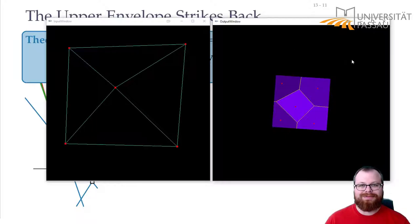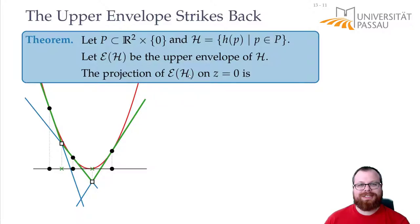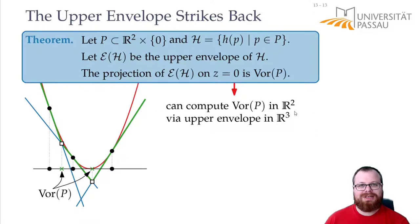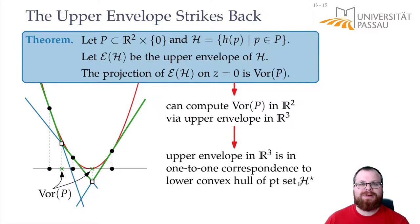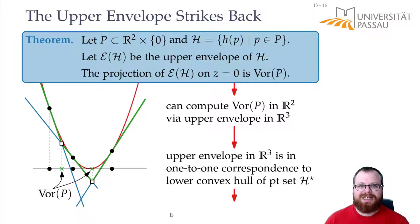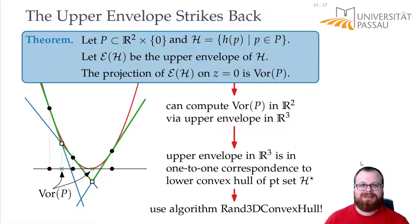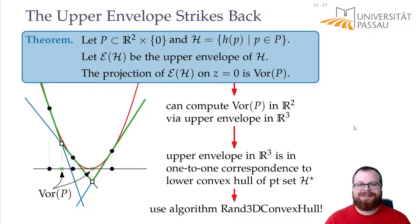This is something that blew my mind when I first saw it. Just from the projection of the upper envelope we get the Voronoi diagram, meaning we can compute the Voronoi diagram in two dimensions via the upper envelope in three dimensions. And we established a duality between the upper envelope in three dimensions and the convex hull of a point set in three dimensions. The convex hull we just learned how to compute randomized incrementally in expected O(n log n) time. So that also gives us an O(n log n) expected time algorithm to compute the Voronoi diagram and the Delaunay triangulation. I hope you find this just as fascinating as I did. Thank you for watching.